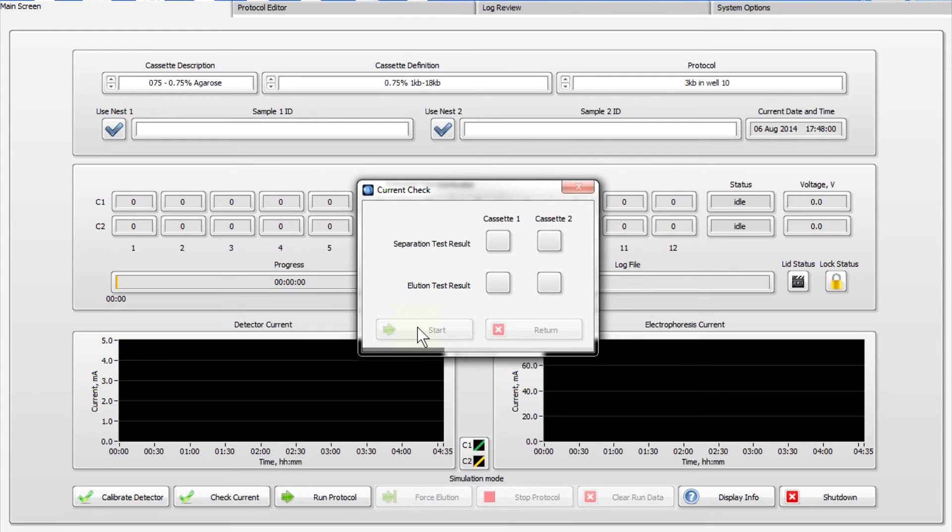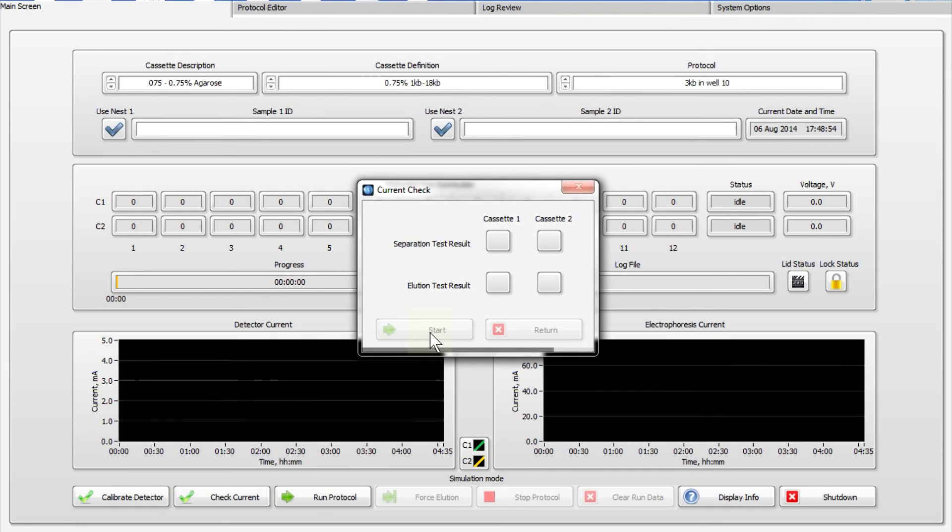The most common causes of current failure are buffer related. If you experience a separation failure, top off the cassette with buffer. If you experience an elution failure, replace the elution well buffer once again. If you get a second failure, contact Sage Science Support.